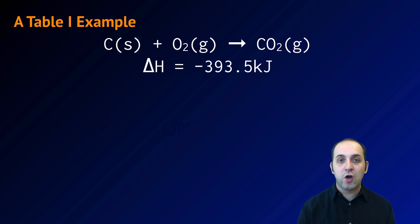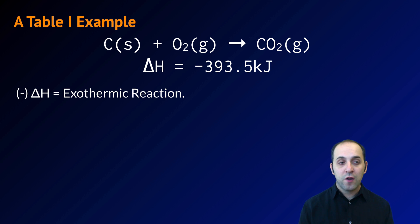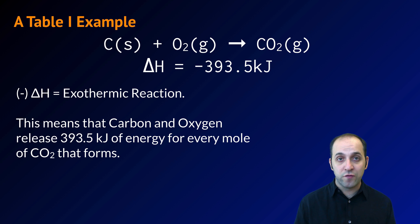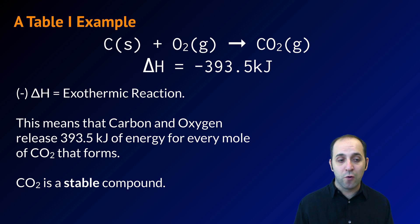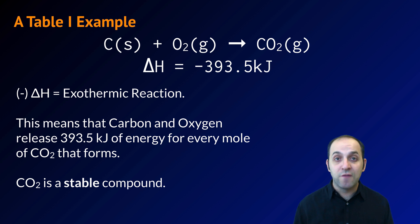Here's a real example from Table I: C + O₂ → CO₂, with a delta H of negative 393.5 kJ. This is exothermic as shown by the negative delta H value. To produce one mole of CO₂, we release 393.5 kJ of energy. To find energy released from four moles of CO₂, multiply that by four. CO₂ is a stable product compared to the reactants it was produced from.